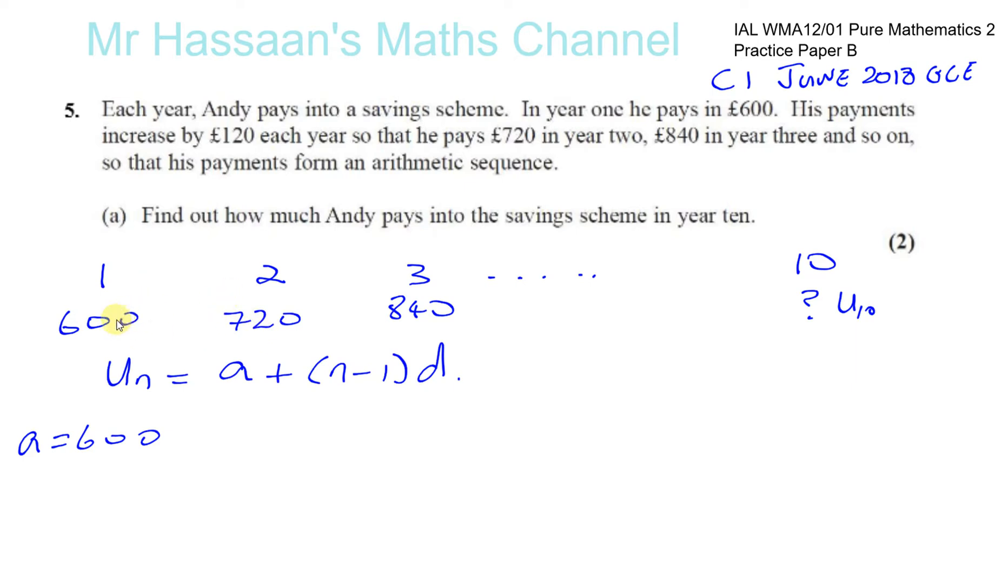The first term a is £600, the second term is a + d which is 600 + 120. The common difference is £120. So the tenth term is going to be 600 + (10-1) × 120, which is 600 + 9 × 120.